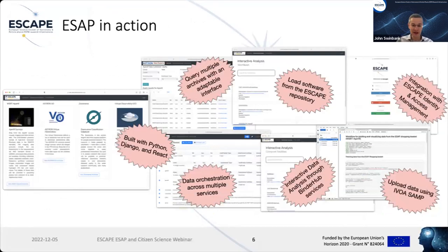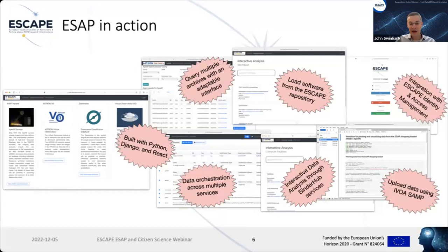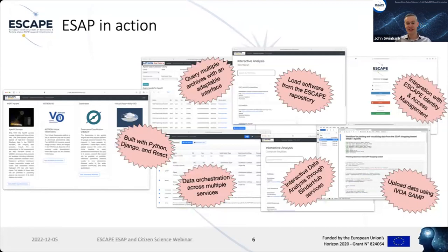When they do that, they end up with a modern-looking web application built with standard open source technologies like Python, Django, and React. It lets users query and work with different archives, load software products from the ESCAPE repositories, integrate with ESCAPE identity and access management, interoperate with virtual observatory services, provide interactive data analysis via Jupyter systems, and work with BinderHub services — a pretty full-featured interactive analysis environment.